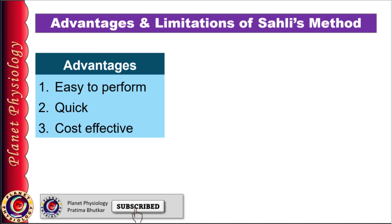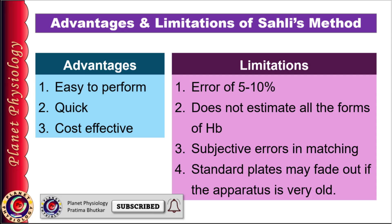The advantages of Sahli's method are that the procedure is very easy to perform, quick, and cost effective. However, it has many limitations: Sahli's method has an error of about 5 to 10% because within 10 minutes only 95% of hemoglobin is converted to acid hematin. Also, this method estimates only oxyhemoglobin and reduced hemoglobin, but not other forms. Since it involves visual color matching, subjective errors may be present. And if the apparatus is very old, color plates may fade and give falsely high values.